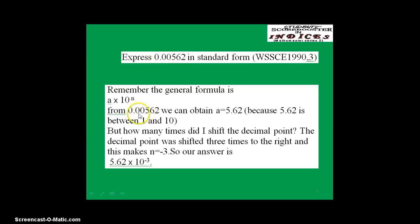You have 0.00562. If you shift the decimal point to the right: 1, 2, 3 — you are going to have 5.62, so your A is 5.62. You may ask, why did I stop here? Remember the definition of A. If I go one more step I get 56.2, which is already greater than 10. And if I stop one step earlier, I get 0.562, which is less than 1. That is the reason why I stop immediately to get 5.62, because 5.62 is between 1 and 10.